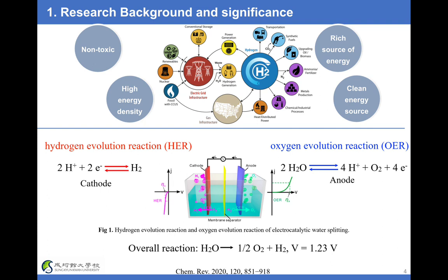In the electrochemical water splitting reactions, the operating potential is always higher than 1.23 V because of the polarization of electrodes, which lowers the total efficiency of water splitting. In order to reduce the high overpotential and enhance the efficiency of water electrolysis, it is highly necessary to introduce a proper electrocatalyst.